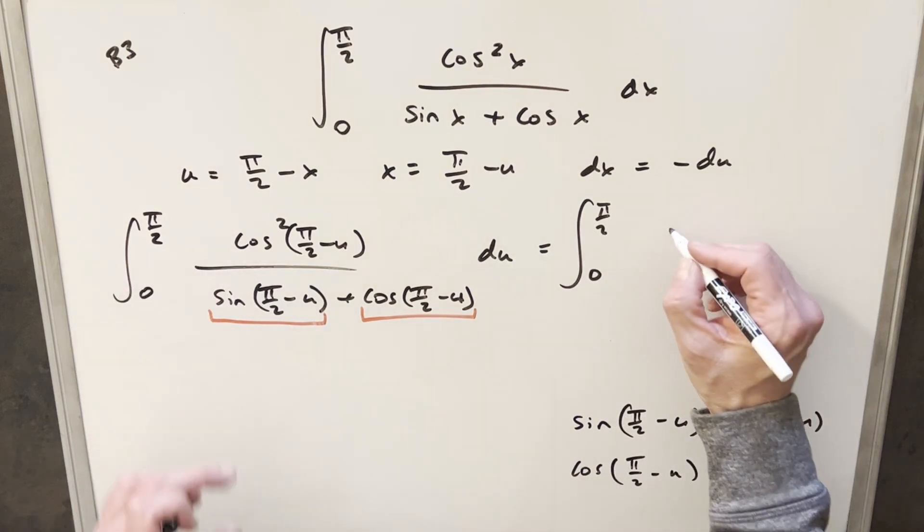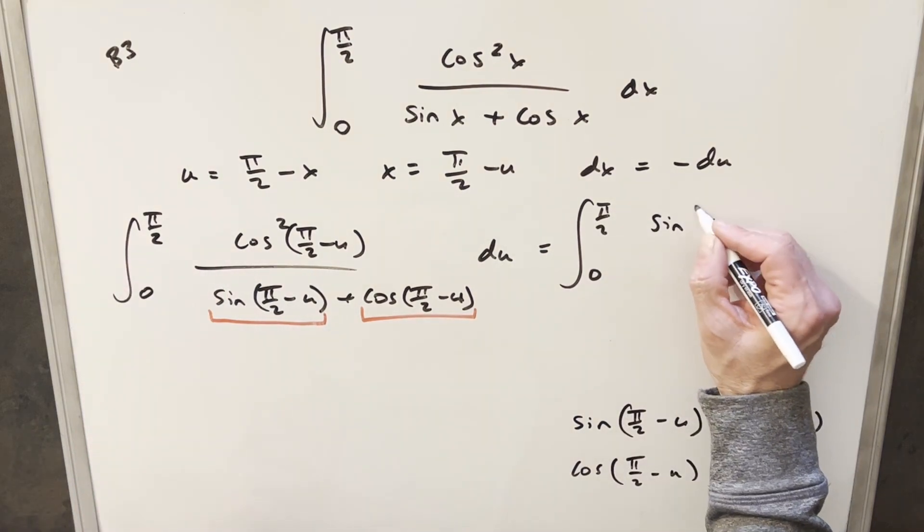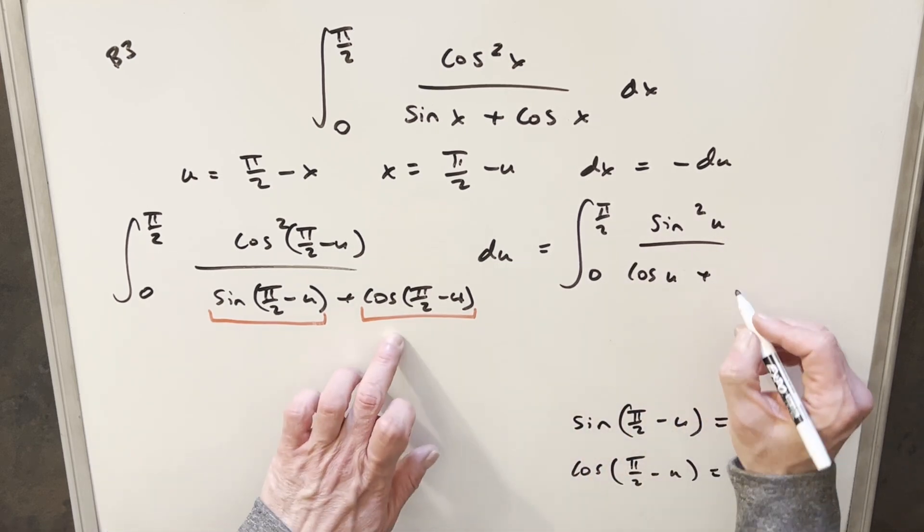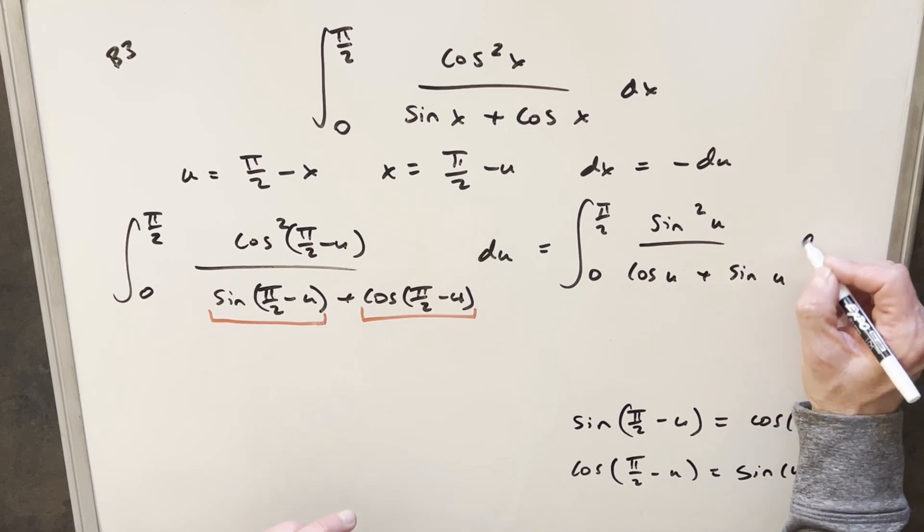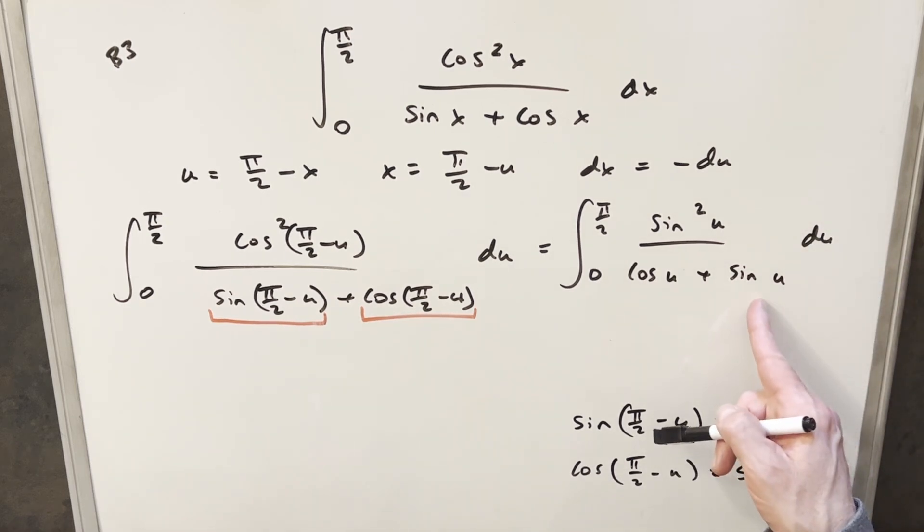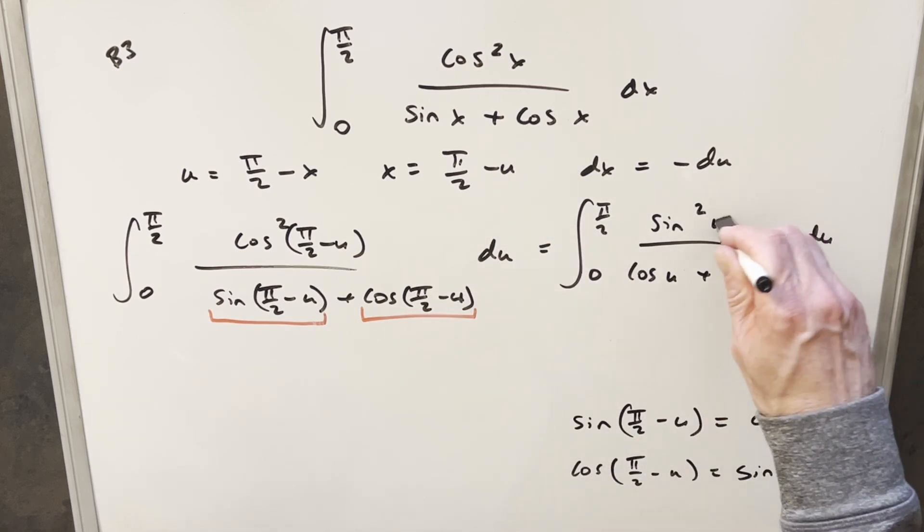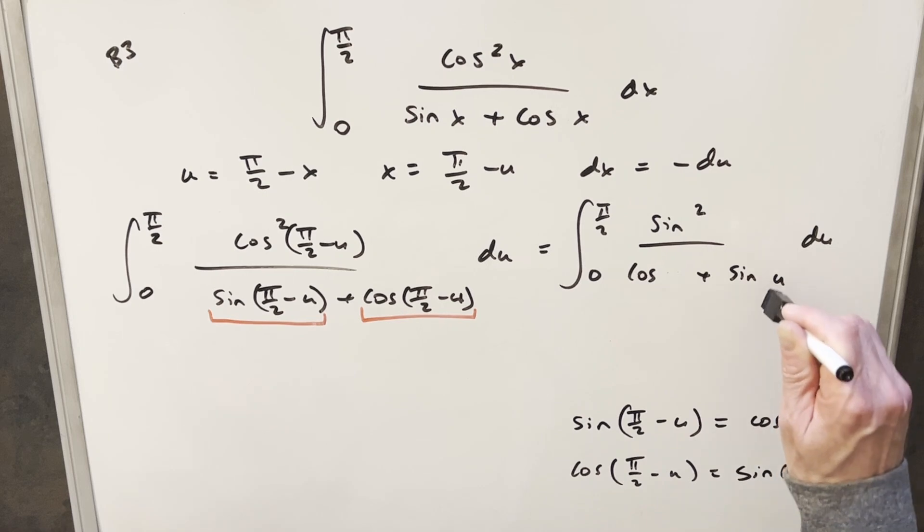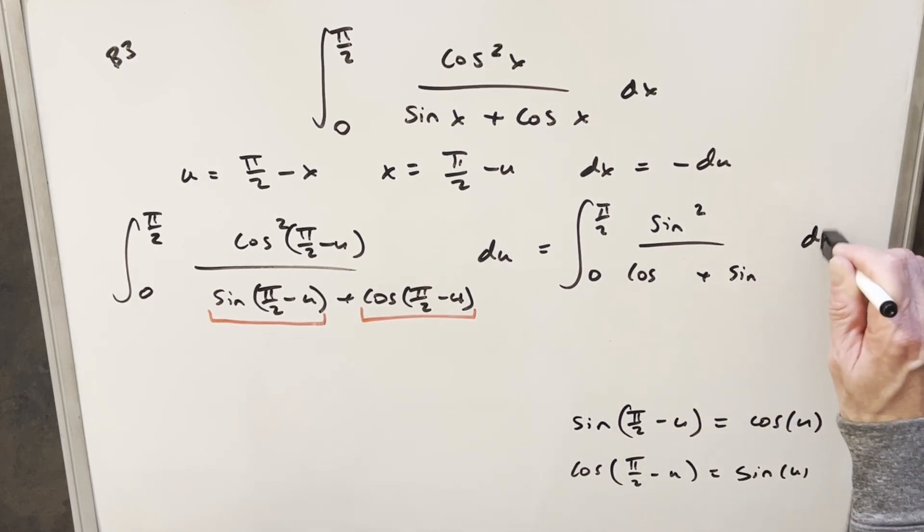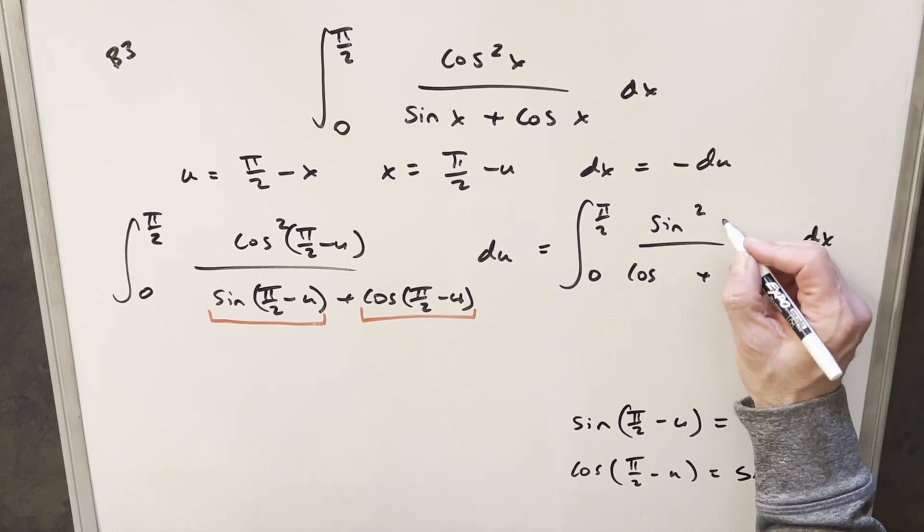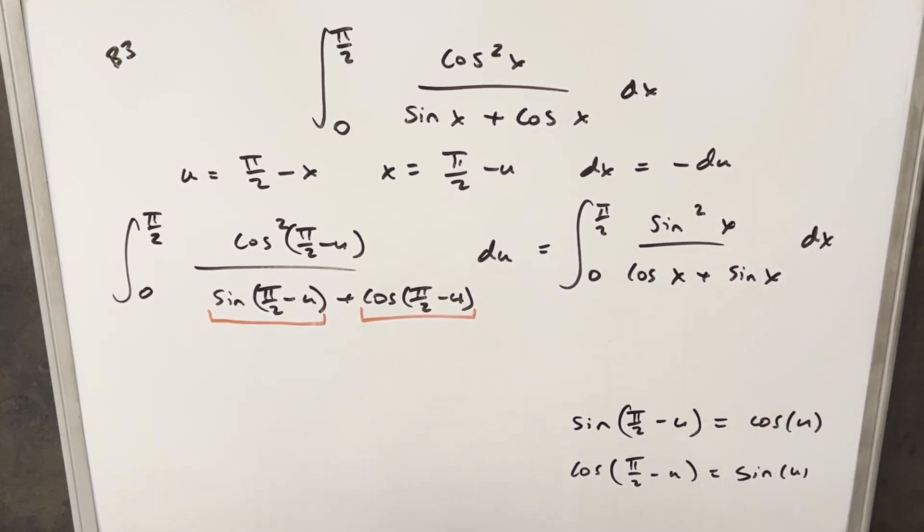So now cosine π/2 minus u, this is going to become sine of u squared. This one's going to become cosine of u, and this one's just going to become sine of u. But here what I'm going to do, I just want to do a variable change. I want to get everything back to x because I'm trying to add these two together. And it's a definite integral, so it's fine if I change my variable, the variable name. The variable is not going to change a definite integral. It's not going to change the area under the curve. So I'm just going to write this all in terms of x.